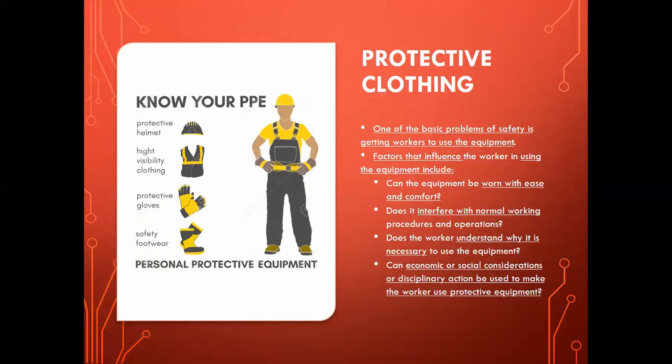One of the basic problems of safety is getting workers to actually wear the equipment. If you've been on site, that is generally one of the problems — or they don't wear the equipment correctly. Factors that influence workers include: can the equipment be worn with ease and comfort? Does it interfere with normal working procedures — is it more difficult to work with gloves on or off? Does the worker understand why it is necessary? Can economic, social, or disciplinary actions be used to enforce use of protective equipment?